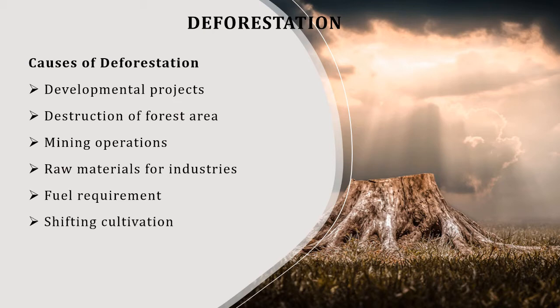Cultivation: replacement of natural forest ecosystems for monospecific tree plantation — for example, teak wood. Forest fire: forest fire disrupts thousands of acres of forest. Overgrazing: overgrazing by cattle reduces the cultivation land. These are the different causes of deforestation.